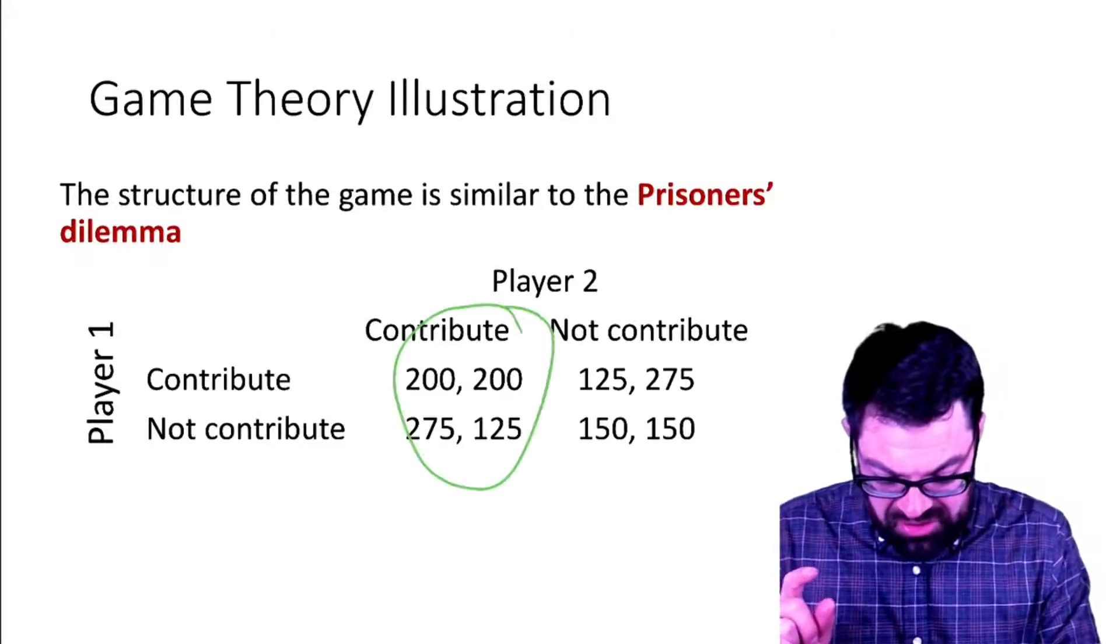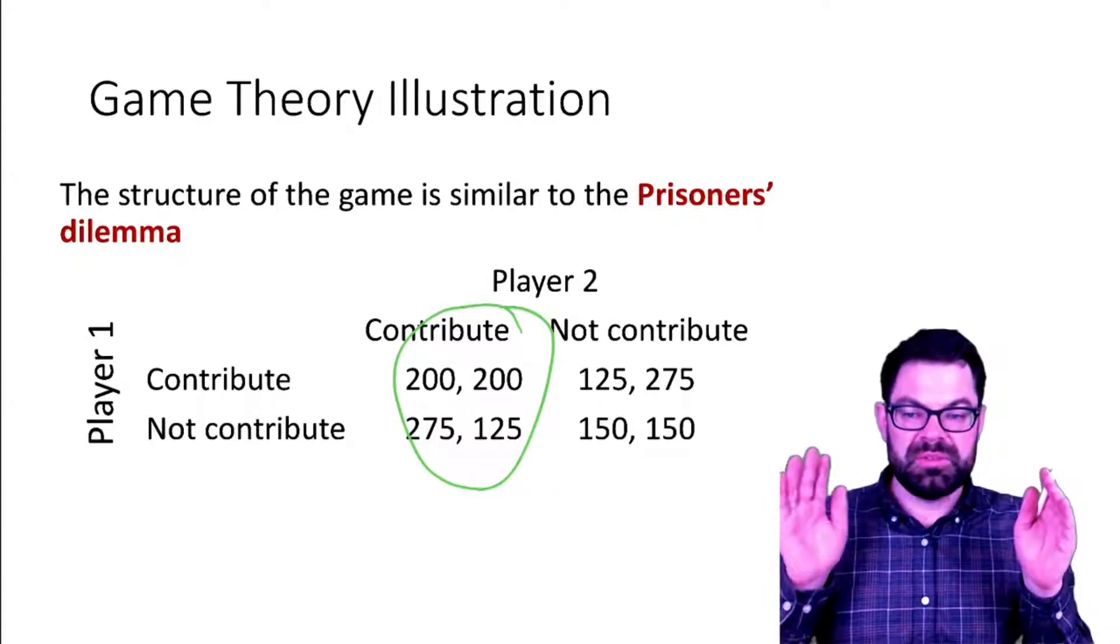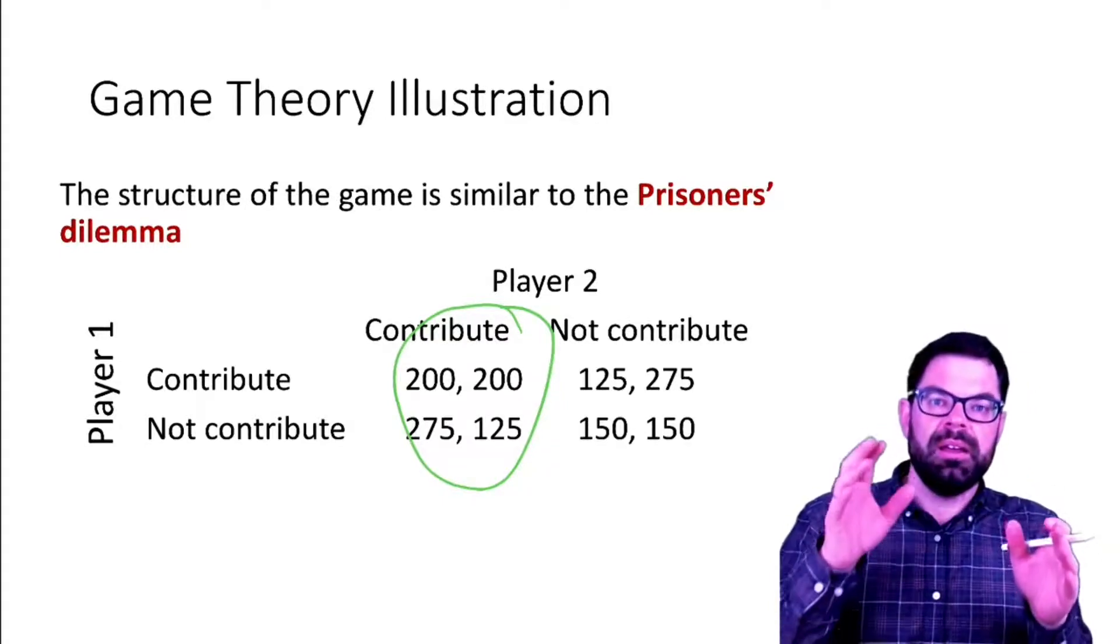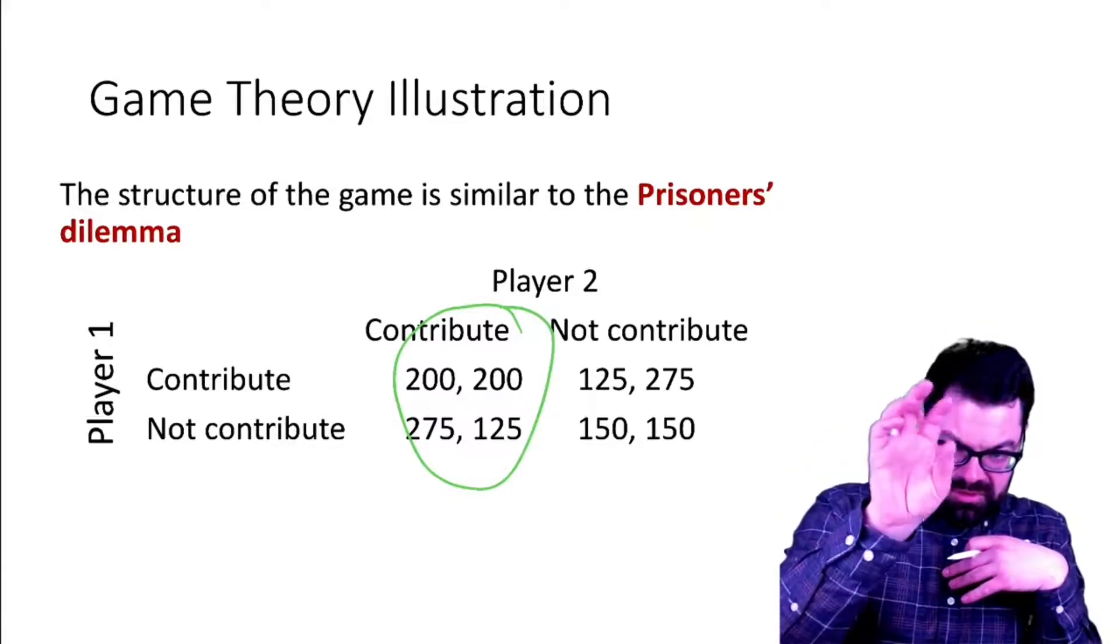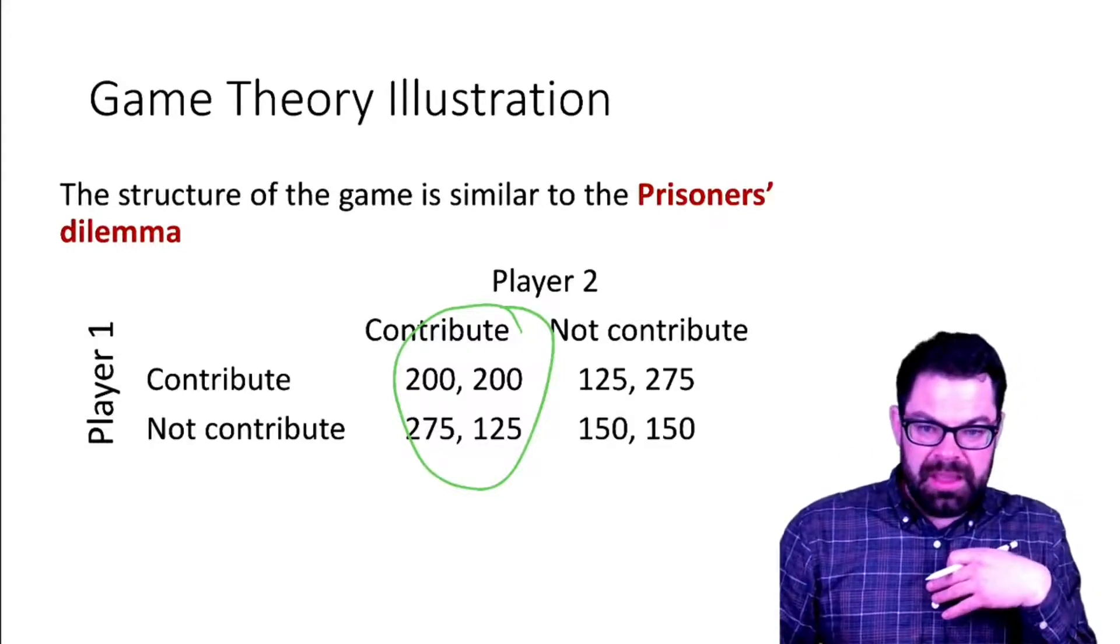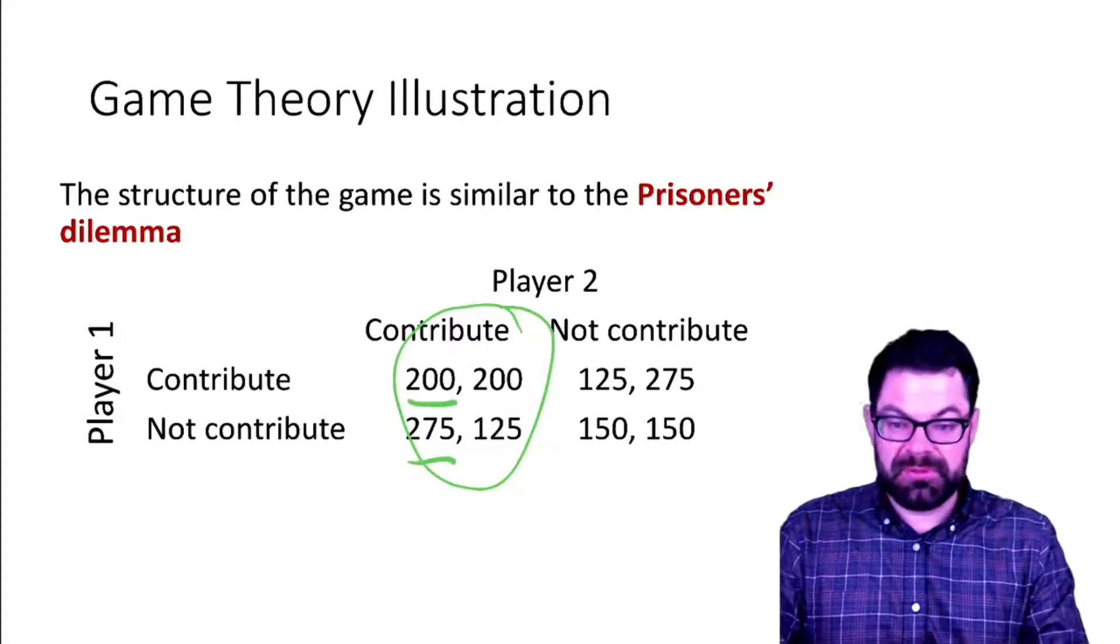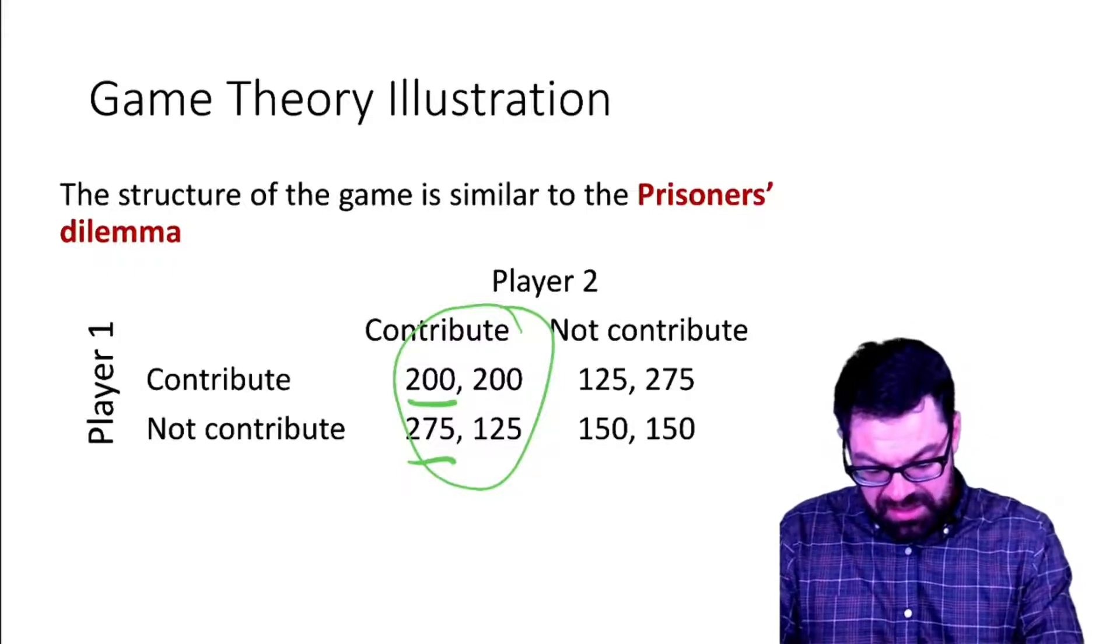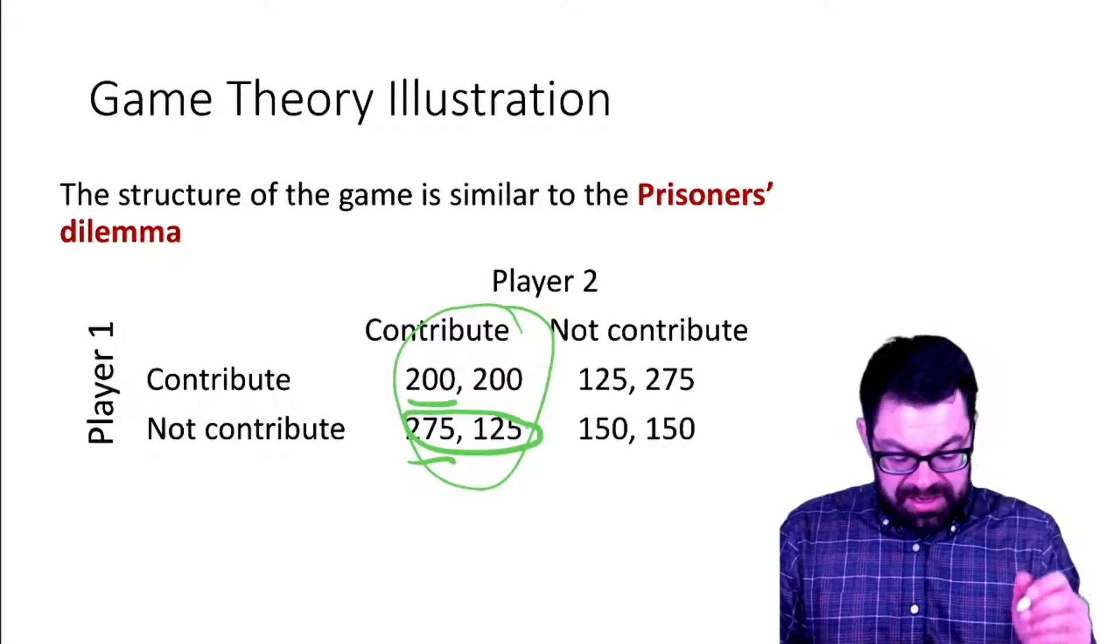Suppose player two plays contribute. If I'm player one and player two contributes to the public good, what is my best action? We can see here that I need to compare 200 to 275, and very clearly my best action is to play not contribute.